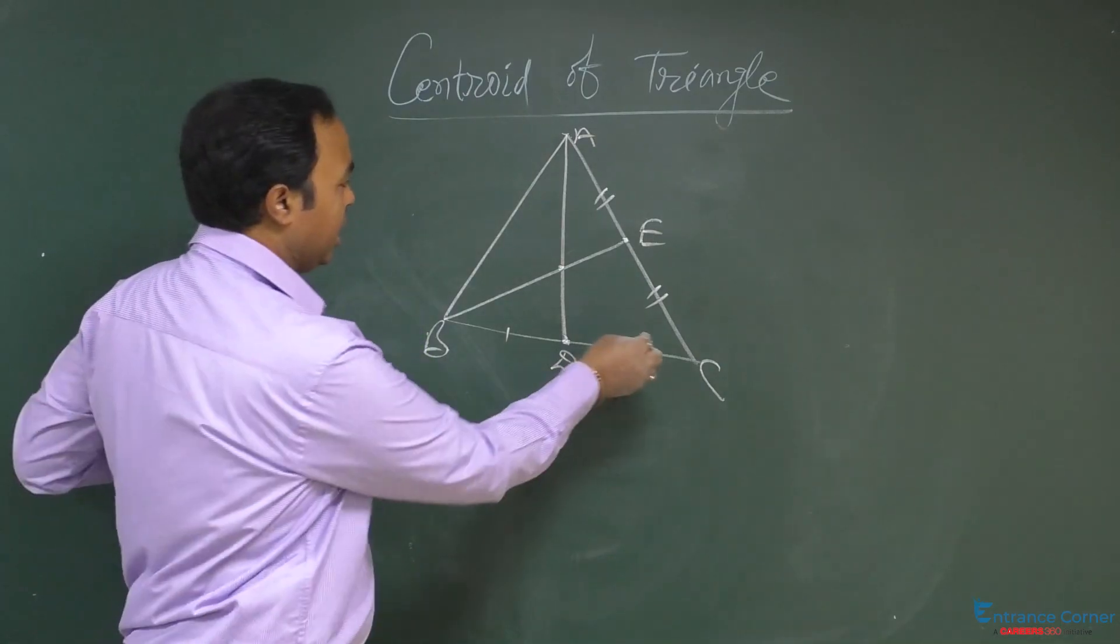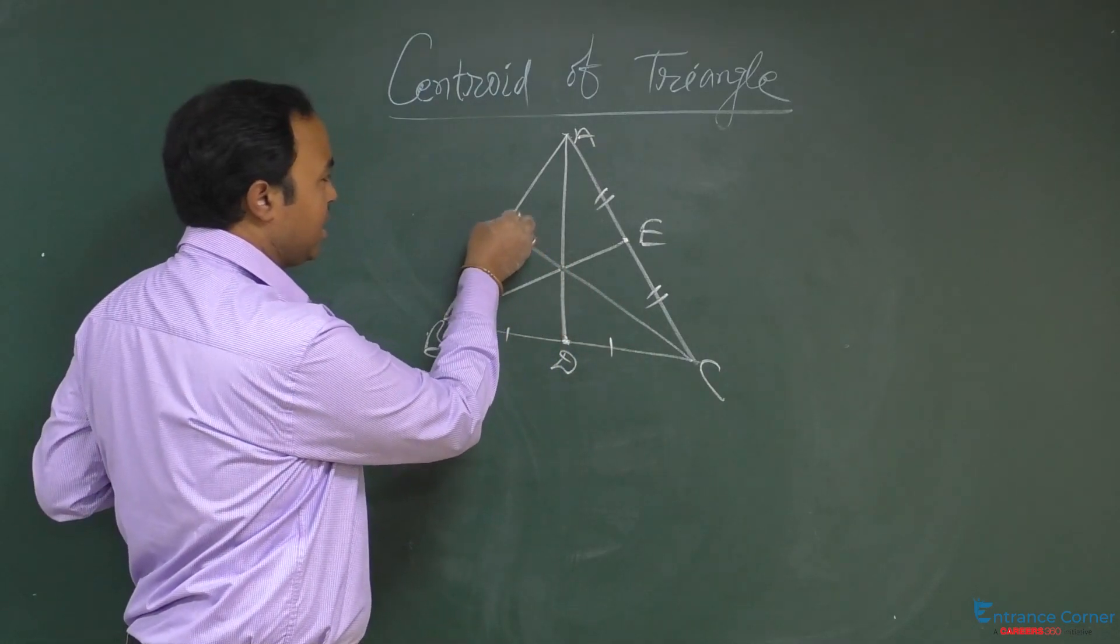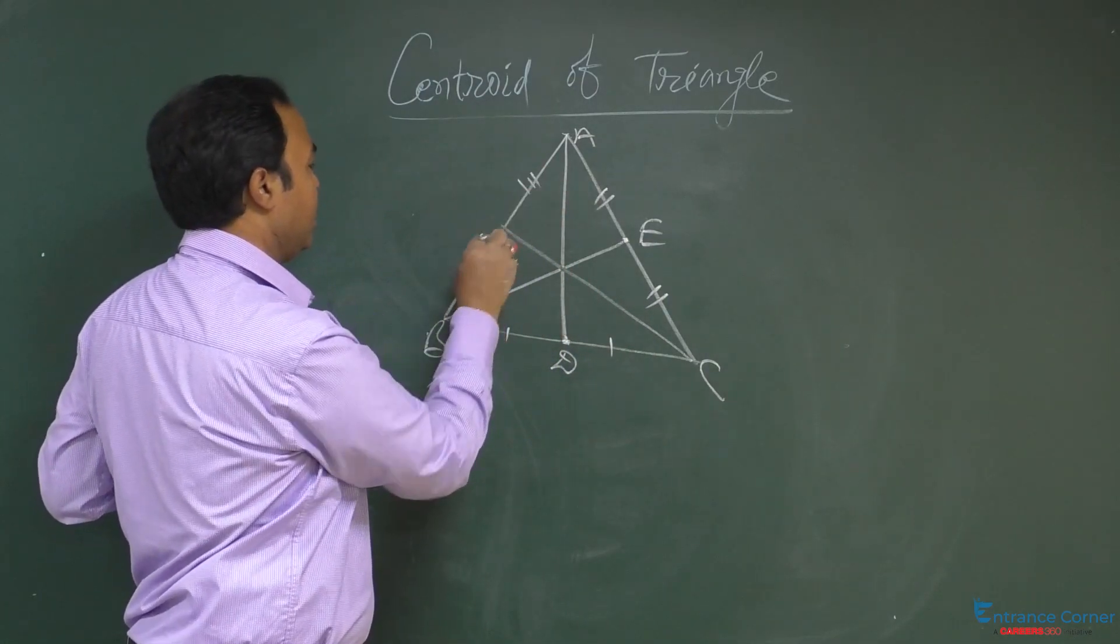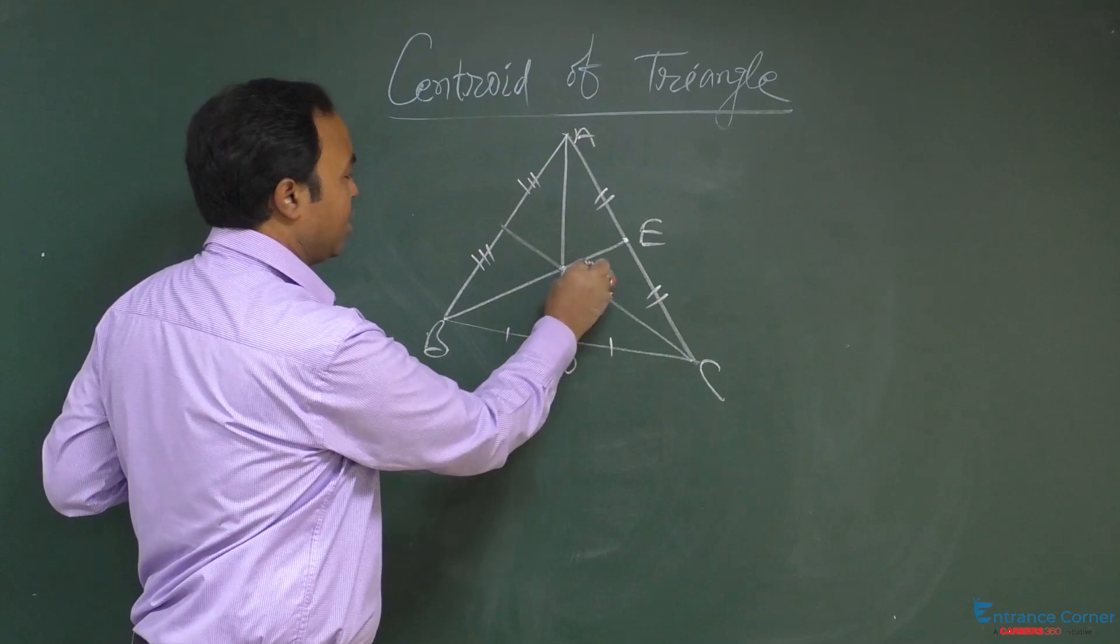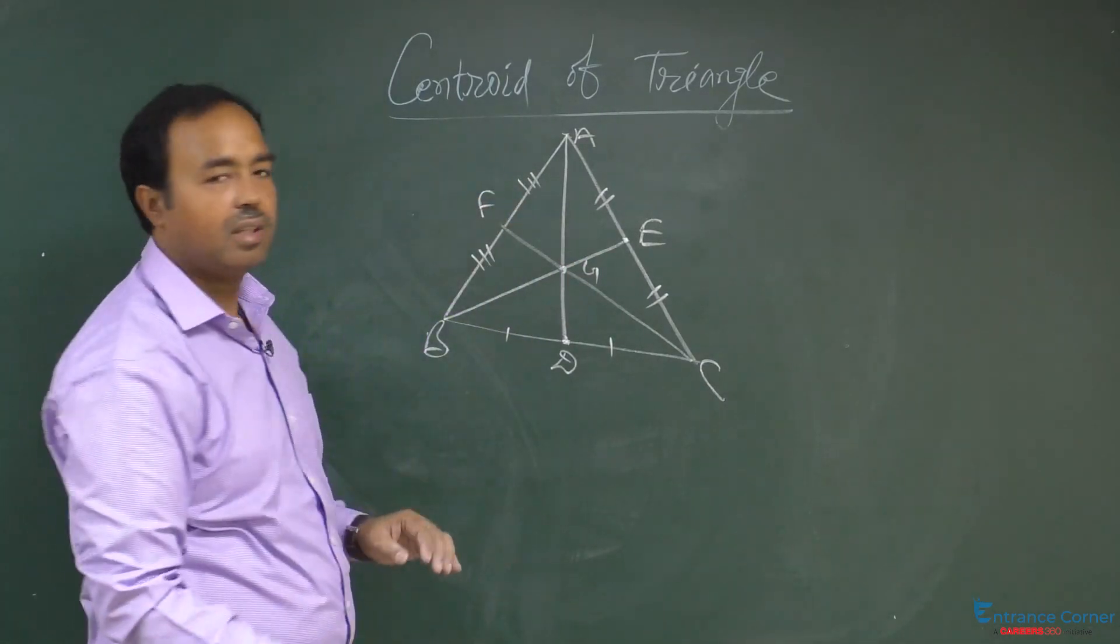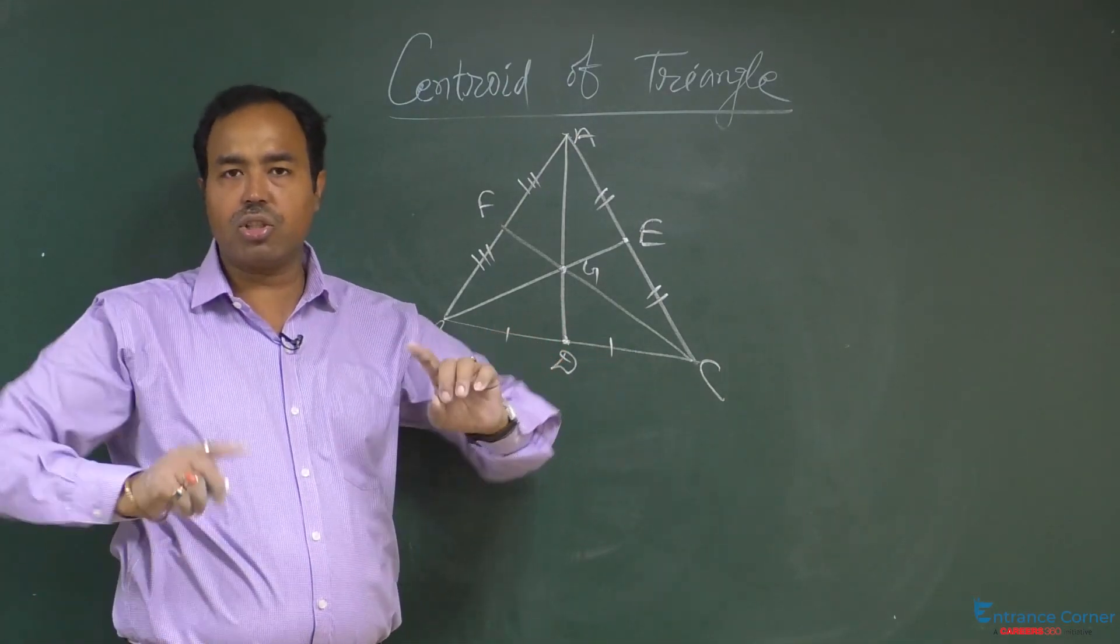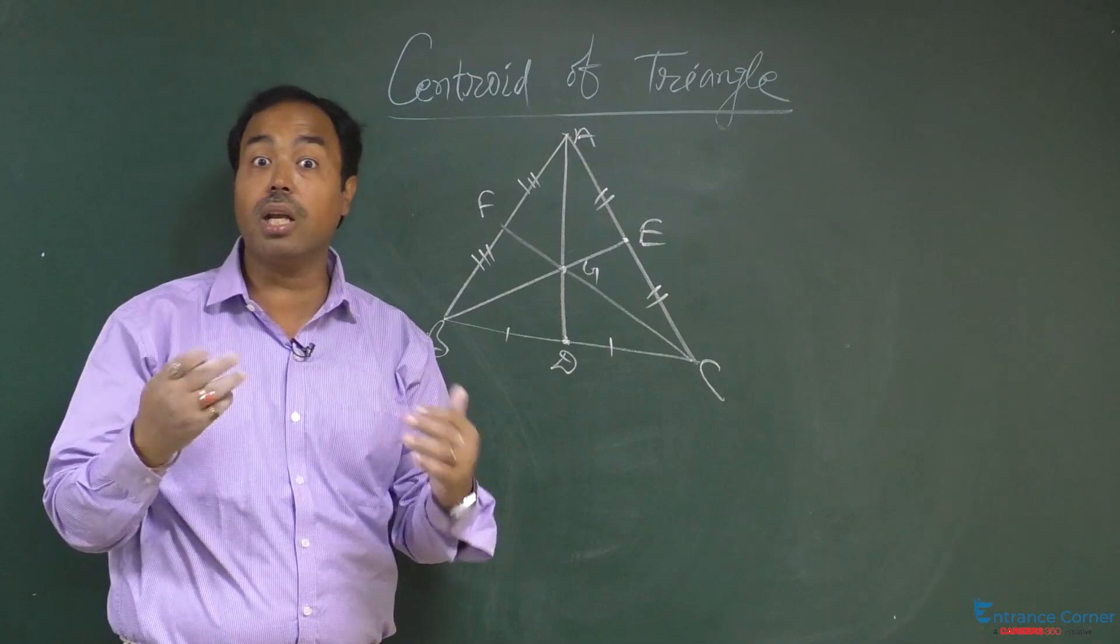Means if you draw the third median, this also passes through the same point and this centroid is named as G. G is the centroid. Now, the question is, what is the coordinate of the centroid?